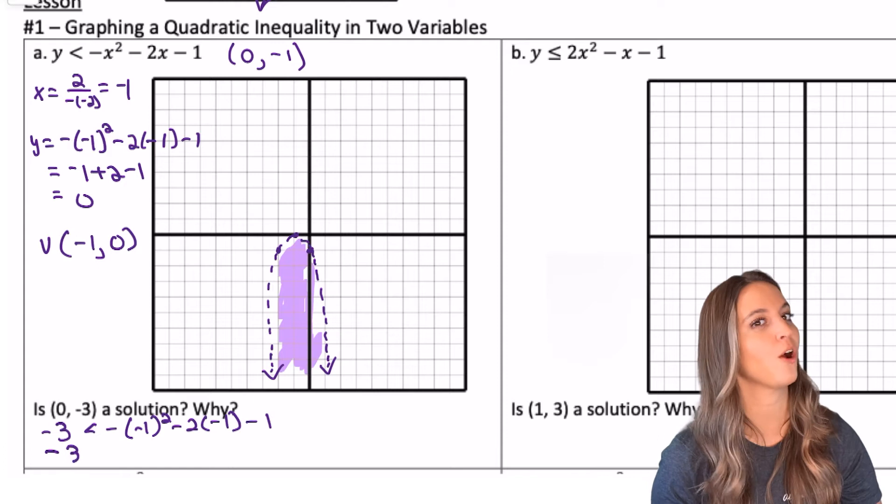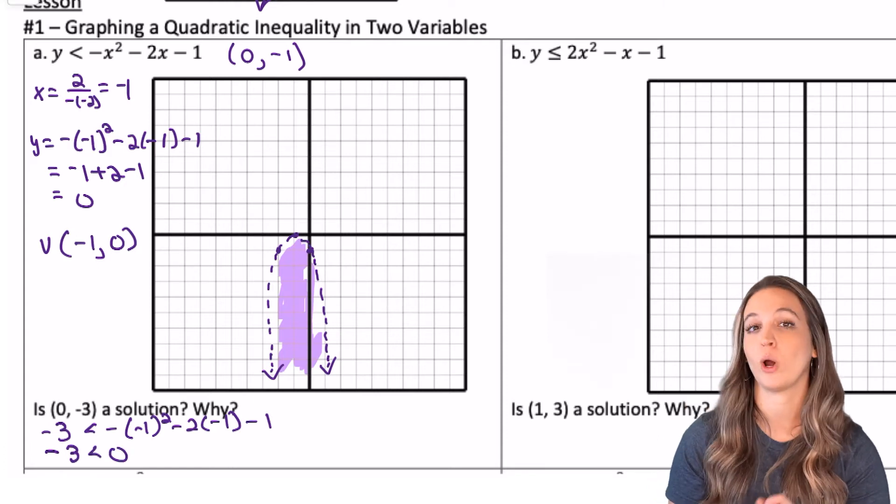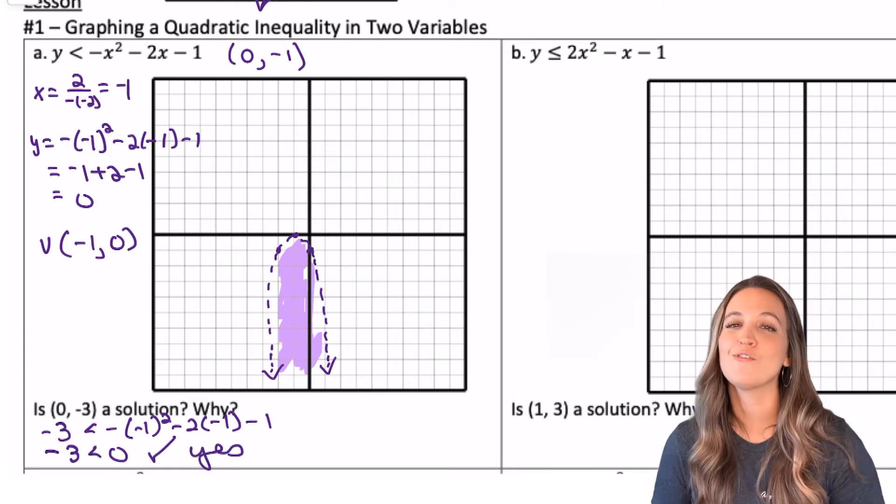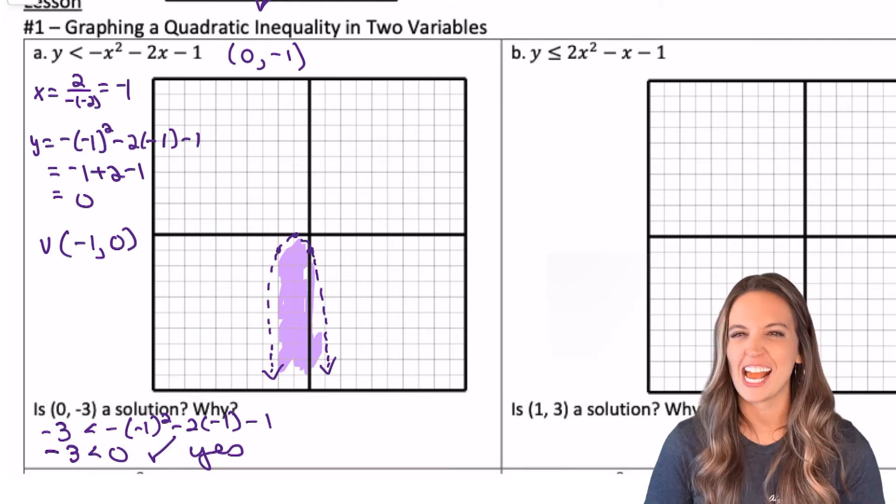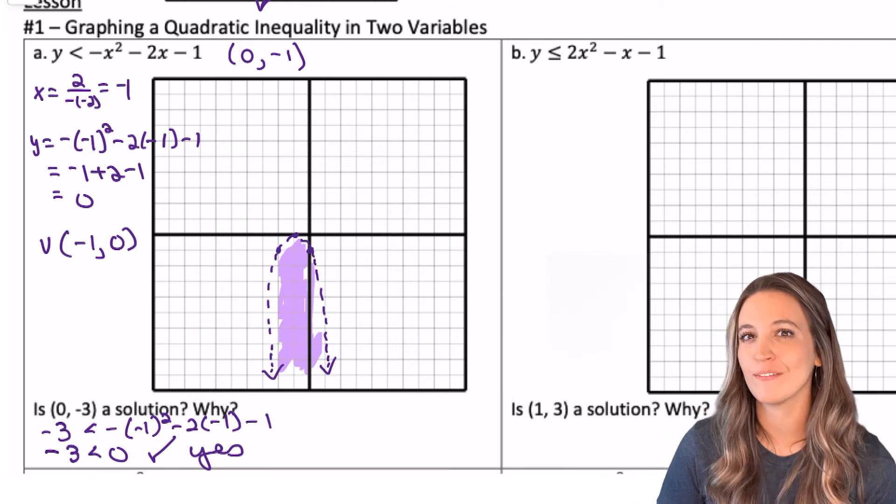Negative 3 is less than 0. Checks out. I think you got this next one. Pause, give it a try.